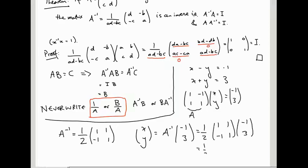And that's a half, 1 times minus 1 plus 1 times 3, that's 2, and then minus 1 times minus 1 plus 1 times 3, that's 4. So overall we get 1, 2, which is indeed the solution we were expecting to get.